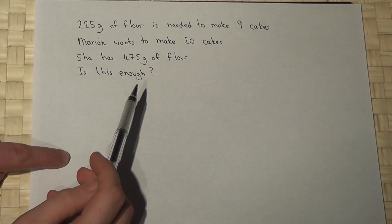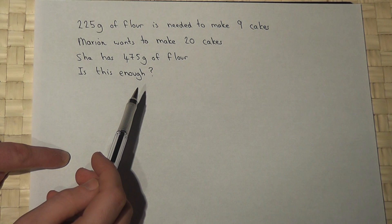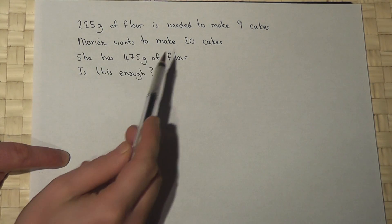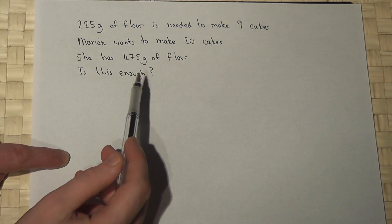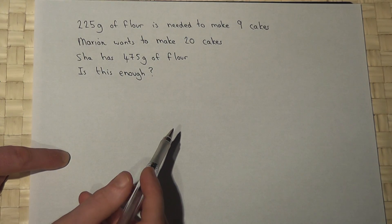225 grams of flour is required to make nine cakes and Marion wants to make 20 cakes and she has 475 grams of flour. Is this enough?